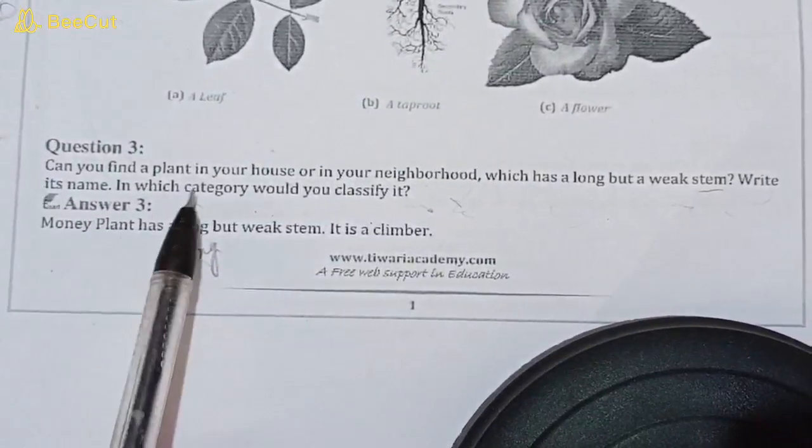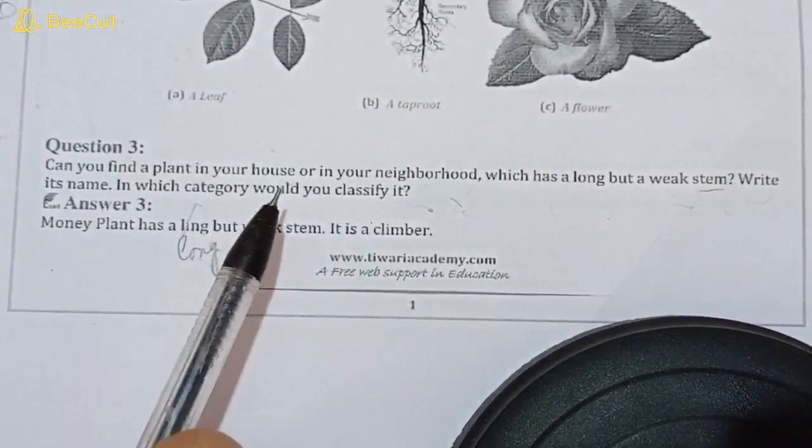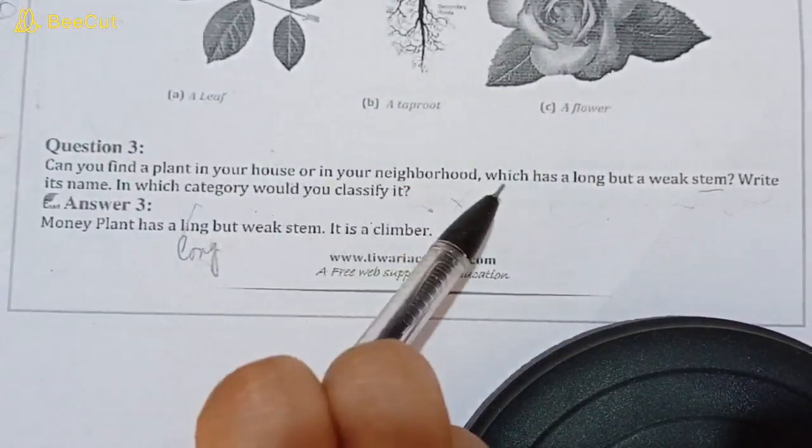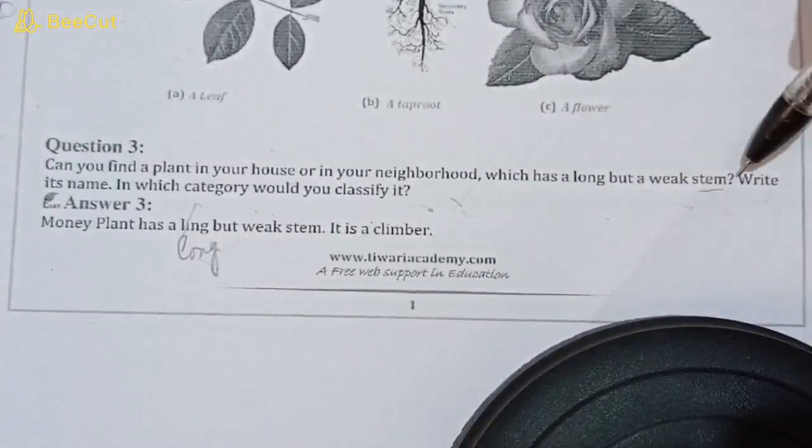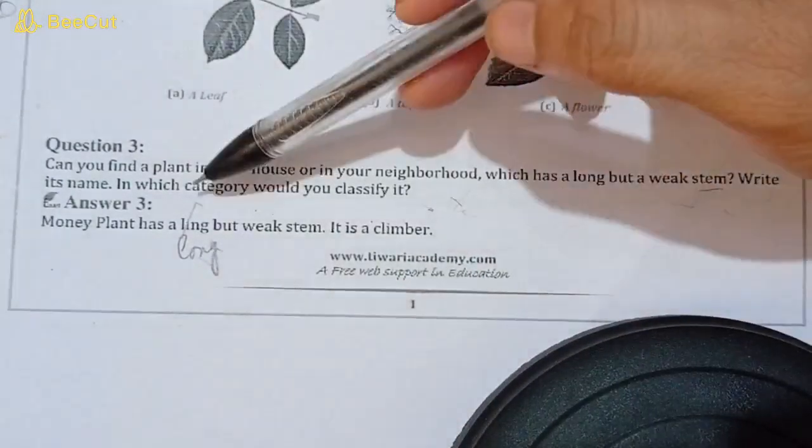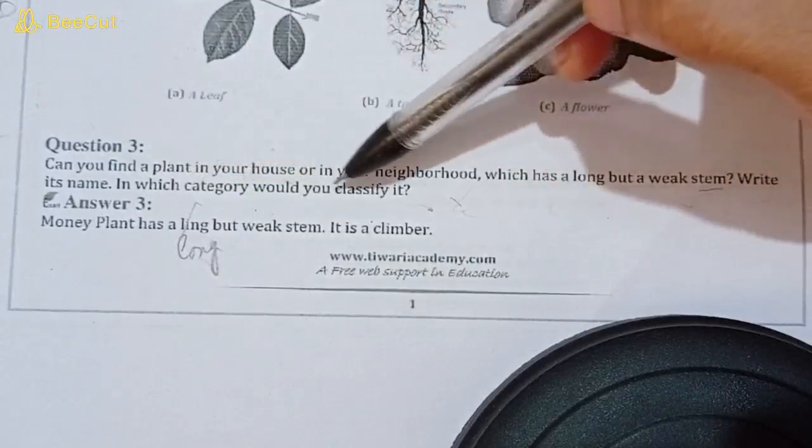Question three: can you find a plant in your house or in your neighborhood which has long but a weak stem? Write its name. In which category would you classify it?